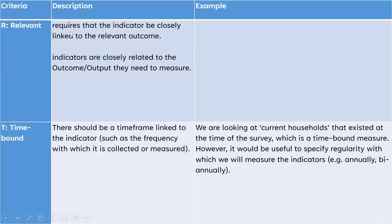The indicator should be Relevant — closely linked to the relevant outcomes, goal, or outputs. It should be Time-bound — for example, 'by 2025' or 'by this year.' Using the word 'current' in an indicator is also a form of time-bounding. It also helps to specify the regularity with which the indicator will be measured — annually or otherwise. These criteria together make what we call a SMART indicator.